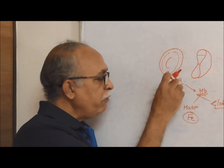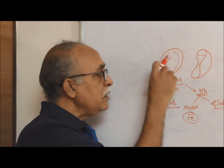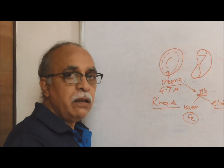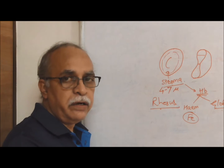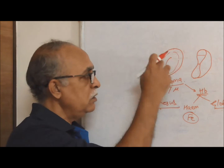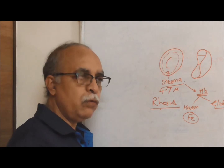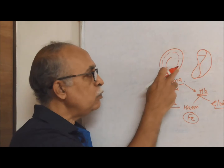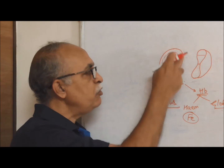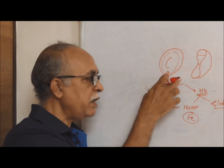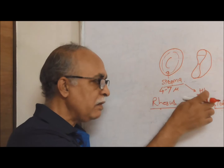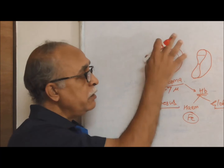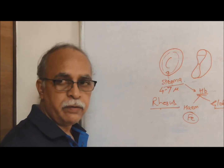The presence of hemoglobin in the stroma region makes the cell red in color. In the periphery there could be transparent cytoplasm, but as seen, the major part of the cell is occupied by the stroma — that is, hemoglobin — which gives it its red color.